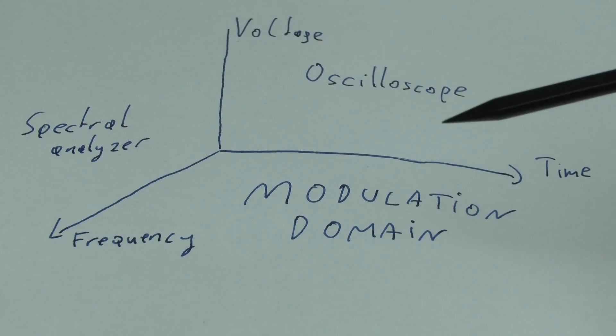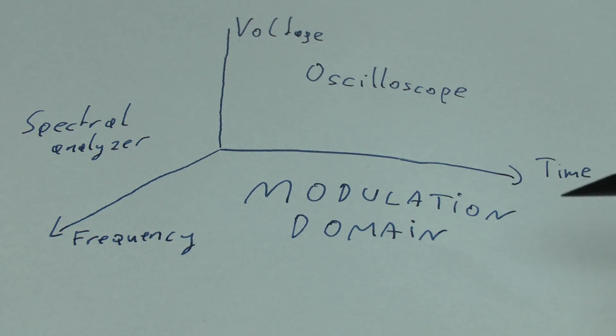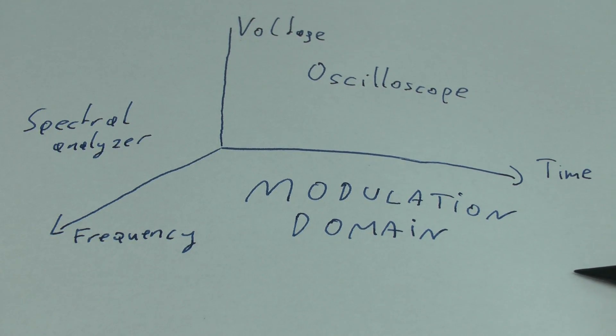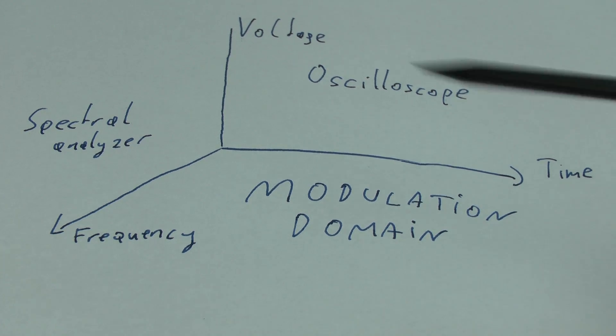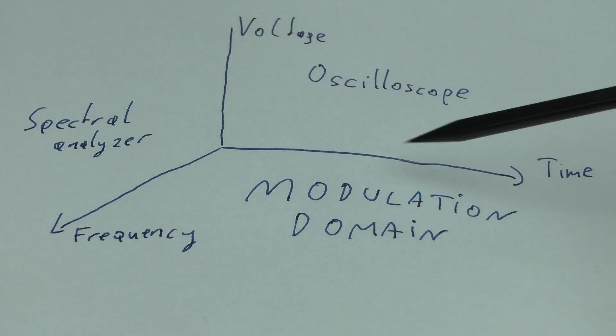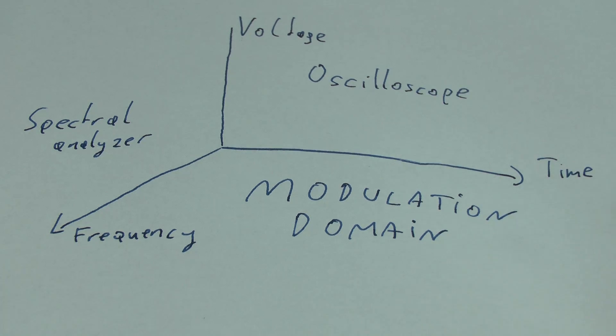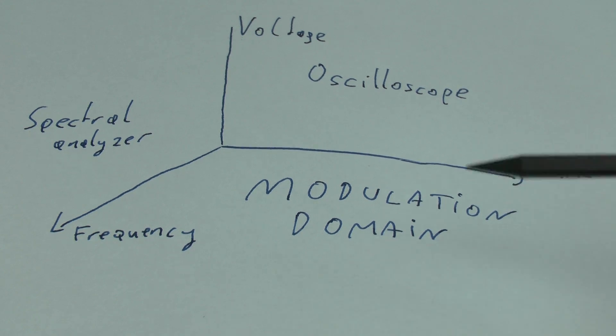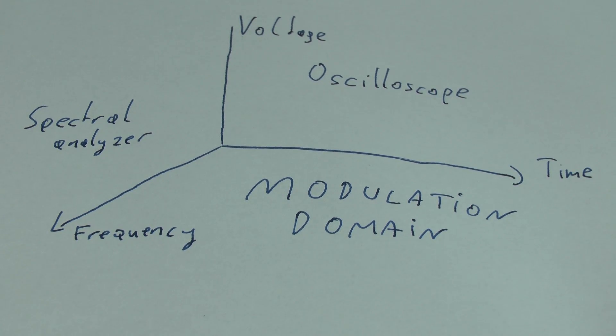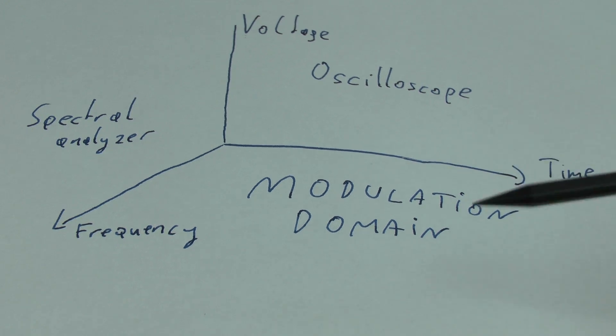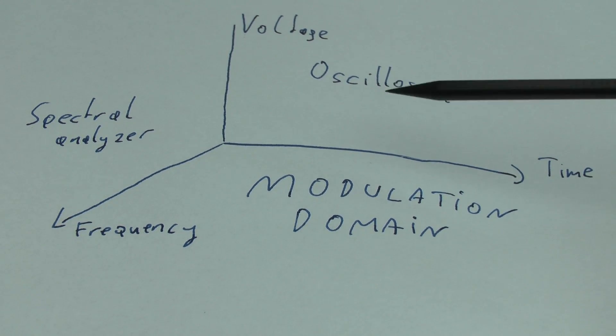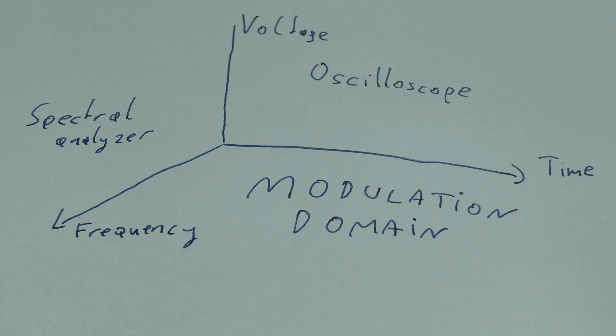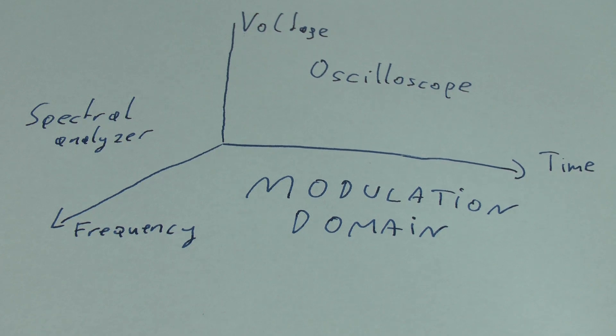And today, we are concerned with the modulation domain, which makes up the third part of this coordinate system. The modulation domain essentially shows the frequency of the signal as the time passes by. A good way to think of the modulation domain analyzer's function is to imagine that it is an oscilloscope which simply doesn't show the voltage, but instead shows the frequency of the signal currently being analyzed.